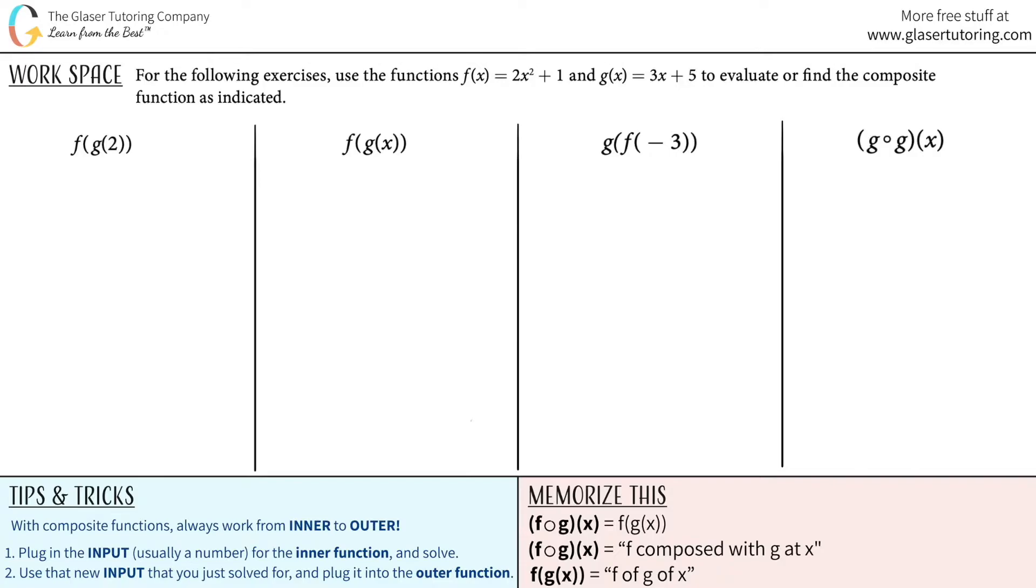For the following exercises, use the functions f of x equals 2x squared plus 1 and g of x equals 3x plus 5 to evaluate or find the composite function as indicated. We have four different examples. All right, so let's work all the way on the left.